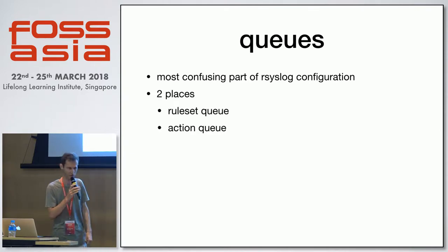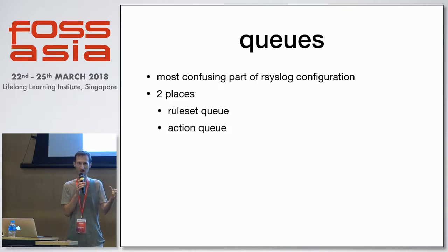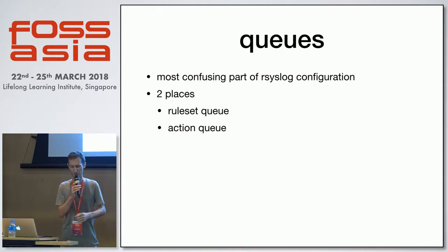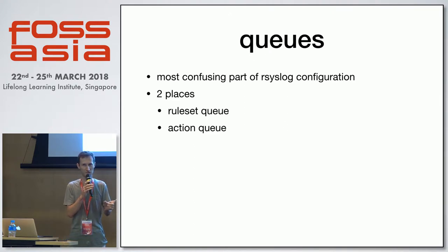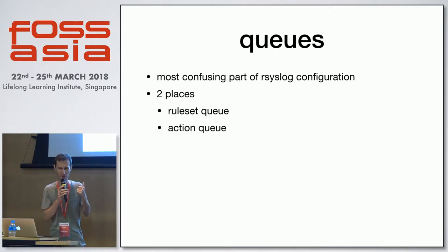You can attach a queue in two places: you can have a ruleset queue — where a message hits when it comes from input — and you can have an action queue, which is where a message goes inside the rule set before going to some output. Both are usable and they behave a bit differently.